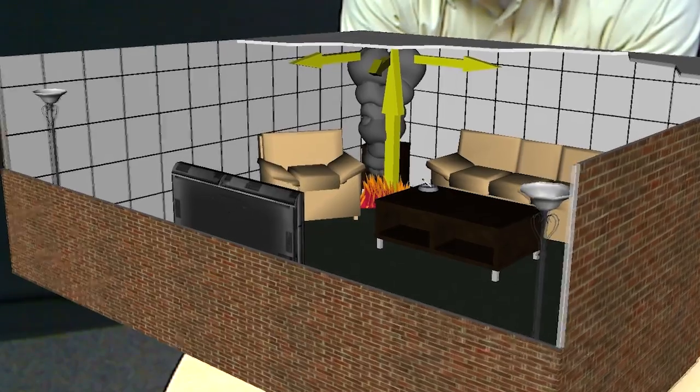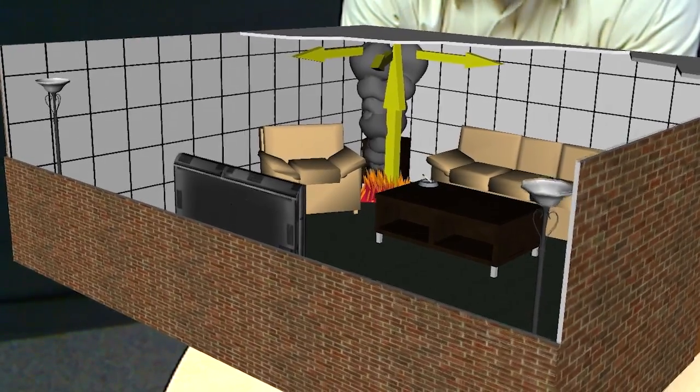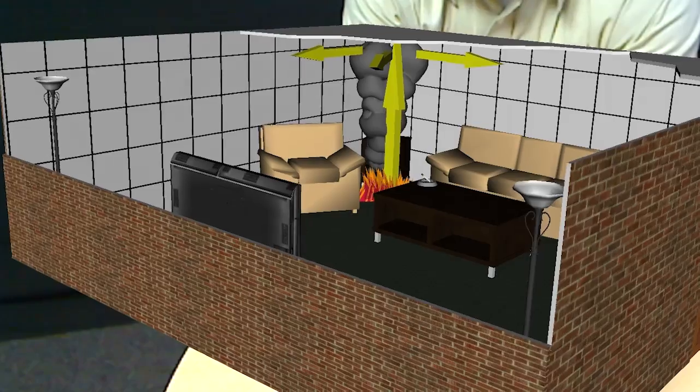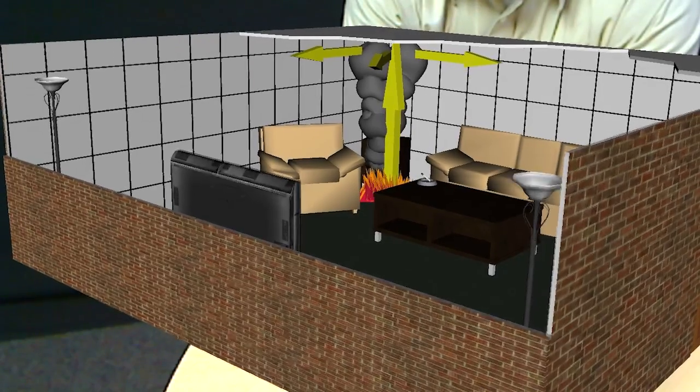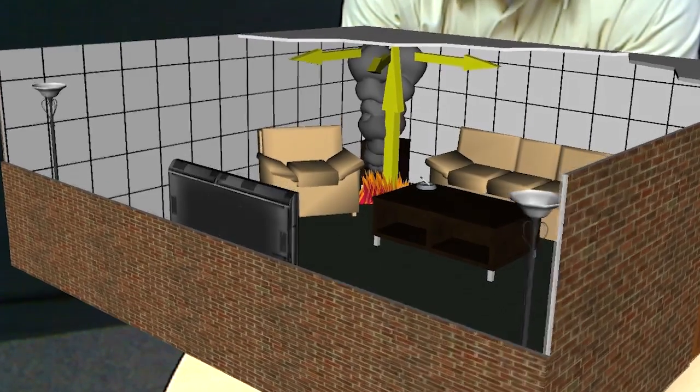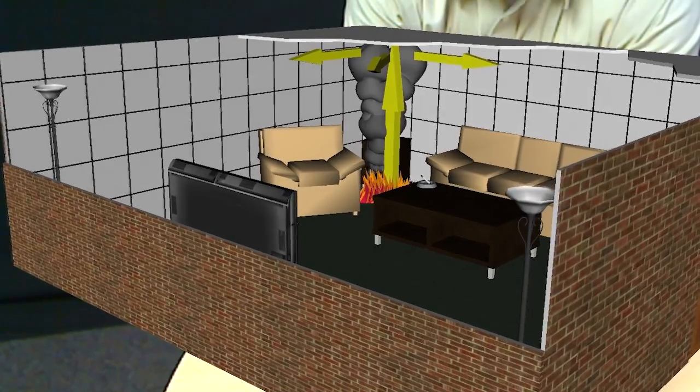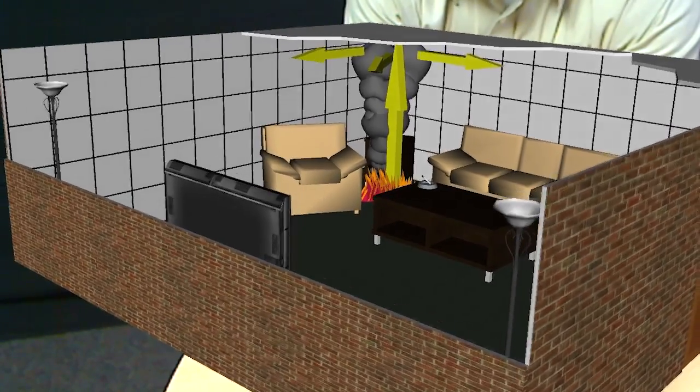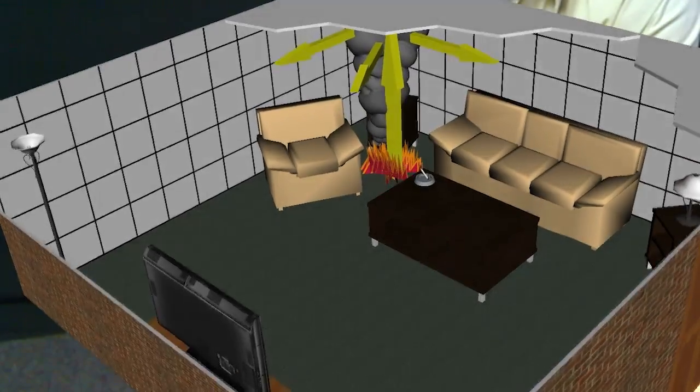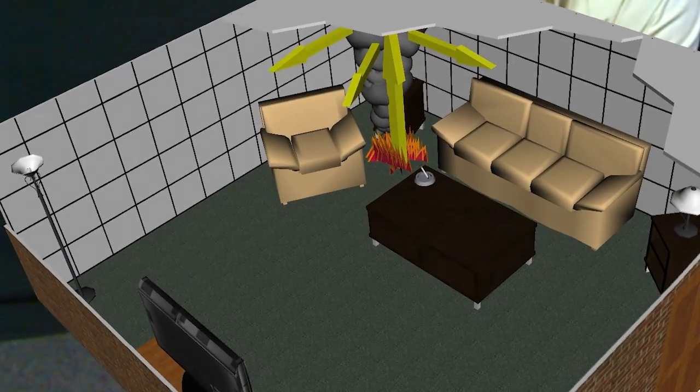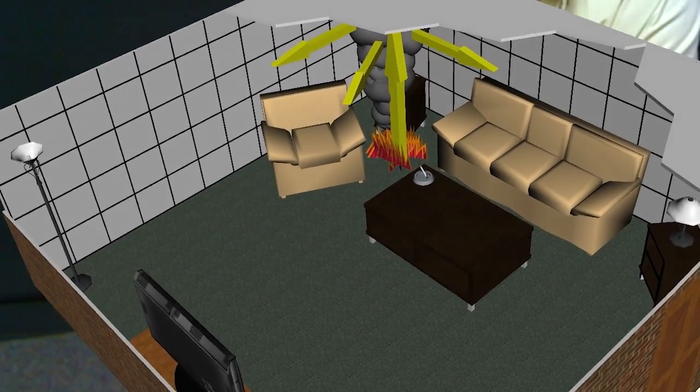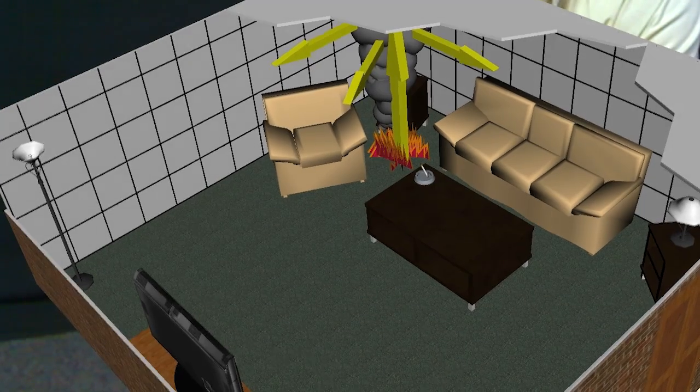And as that smoke rises, it would just rise and eventually stratify out as it cools down. But since we have this in a structure, we have a ceiling. Well, that ceiling forces that flow to go underneath the ceiling. So we get these other yellow arrows that represent what's called a ceiling jet. These ceiling jets are just the redirection of the flow, that thermal plume underneath the ceiling.